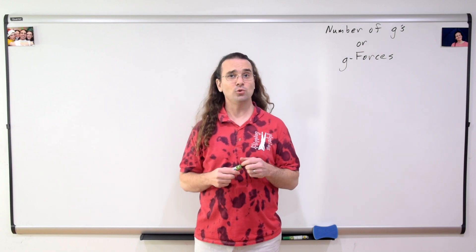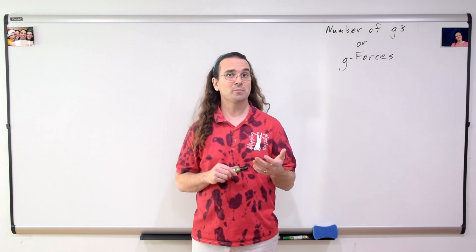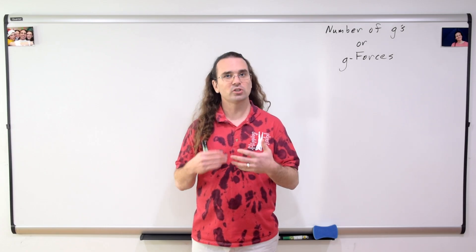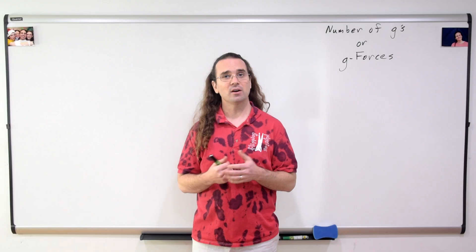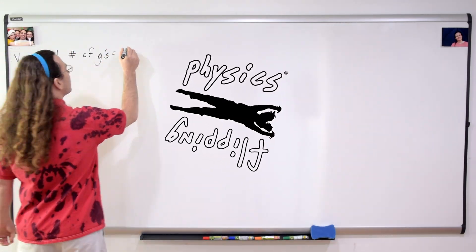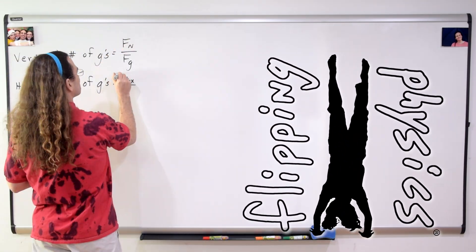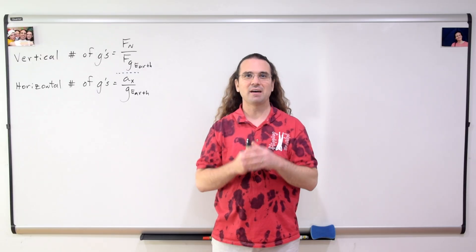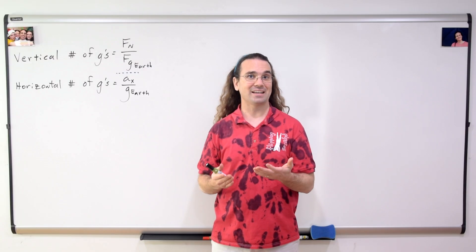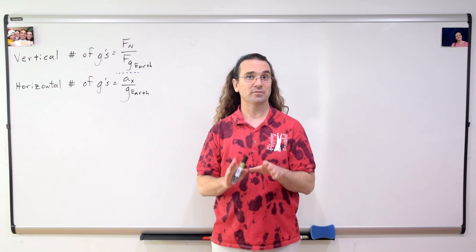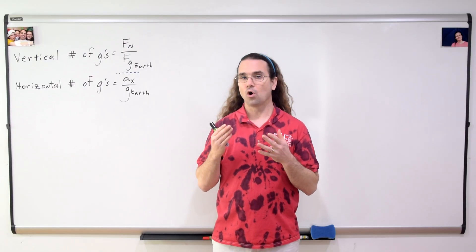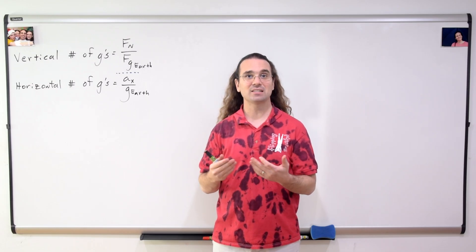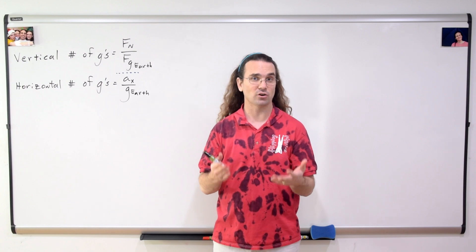Good morning. I have two different equations which I use to determine the number of g's, or what are also called g-forces, which act on an object. The vertical number of g's equals the force normal acting on the object divided by the weight or force of gravity acting on the object when the object is on the surface of planet Earth. The horizontal number of g's equals the acceleration in the x-direction divided by the acceleration due to gravity here on planet Earth.